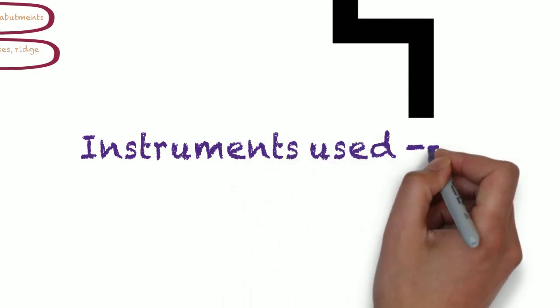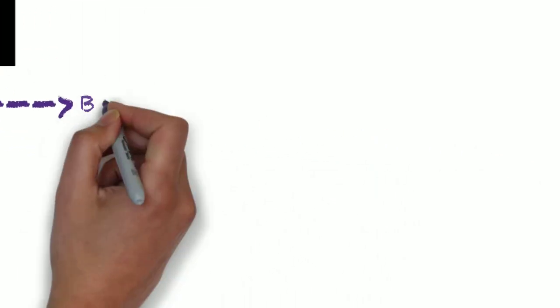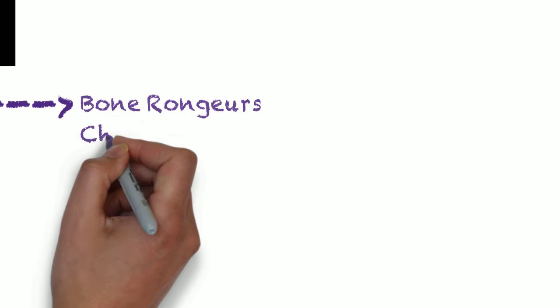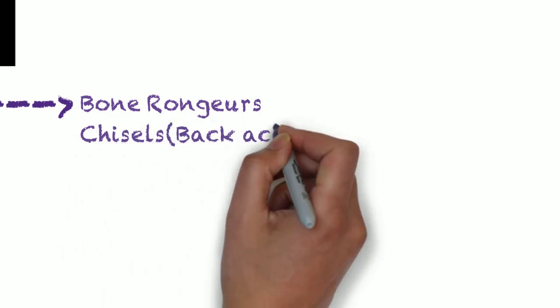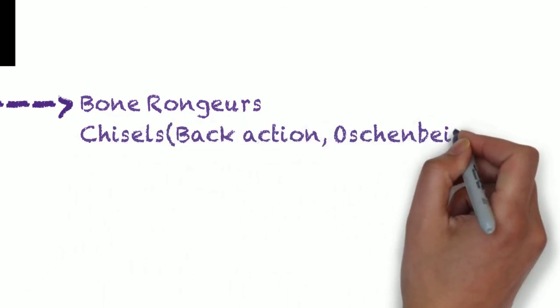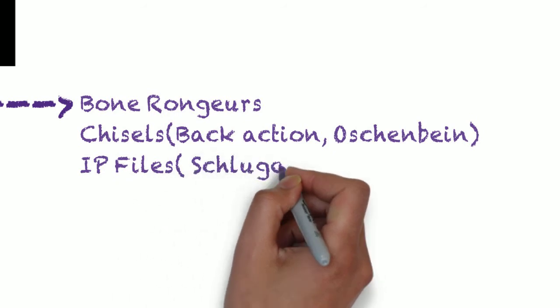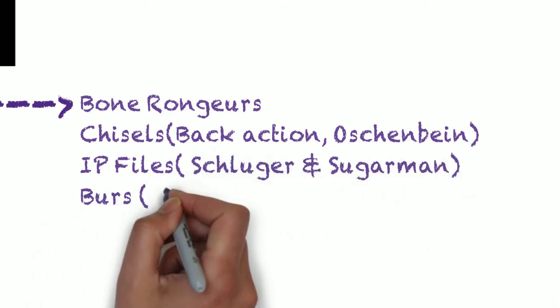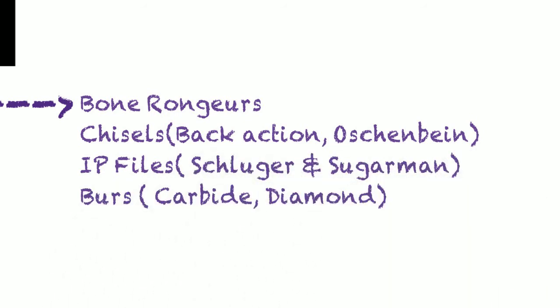We can use a range of instruments for resective osseous surgery including bone rongeurs, chisels such as the back action or Ochsenbein chisels, interproximal files such as the Schluger and Sugarman files, and burs such as carbide and diamond burs.